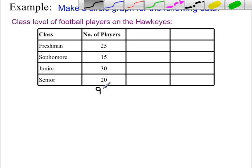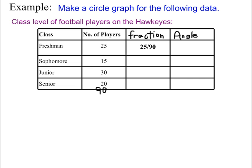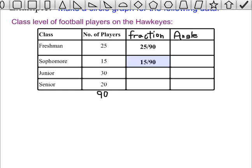I'll make a note of that. Then we're going to need to make an additional two columns. The first column is for the fraction and the last one is for the angle. There are 25 freshmen out of 90 total players, so the fraction is 25 over 90. For the sophomore class we have 15 out of 90. And now let's fill in the last couple of fractions: 30 over 90 and 20 over 90.